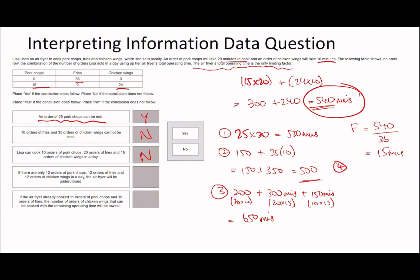For sub-question 4: 12 orders of pork chops, 12 fries, 12 chicken wings. A faster approach is to add the times together (20+15+10 = 45 minutes) and multiply by 12. So 12 times 45 = 540 minutes. The statement says the airfryer will be underutilized - that's wrong. It will be perfectly utilized because you have exactly 540 minutes.